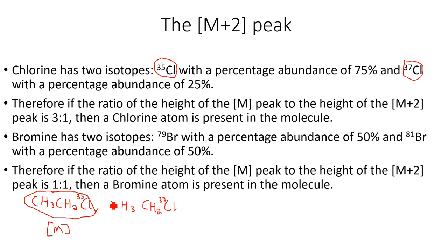And this gives me the M+2 peak, because since the difference between the relative atomic masses of these two isotopes is two atomic mass units, the difference between the relative molecular masses of these two molecules will be two atomic mass units. So I'll have an M peak and an M+2 peak.